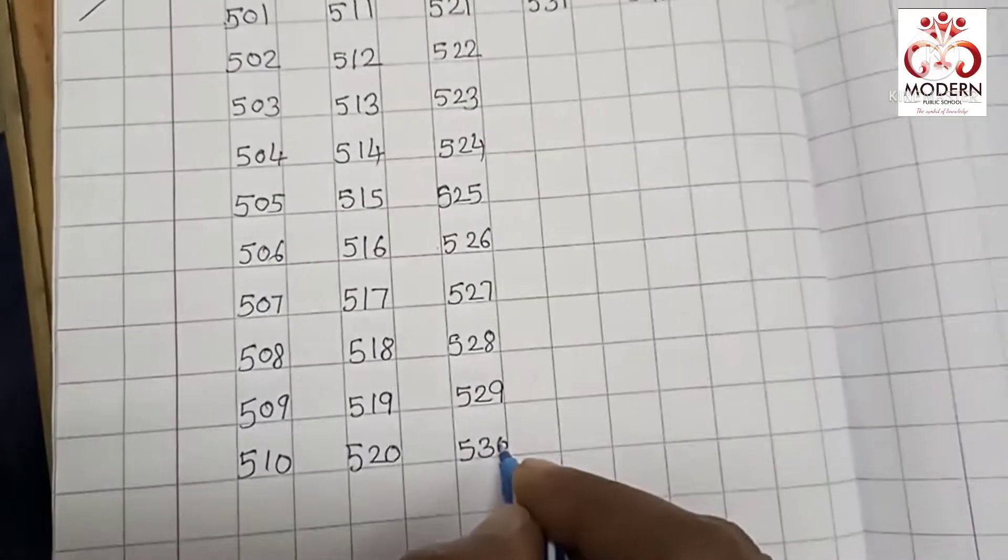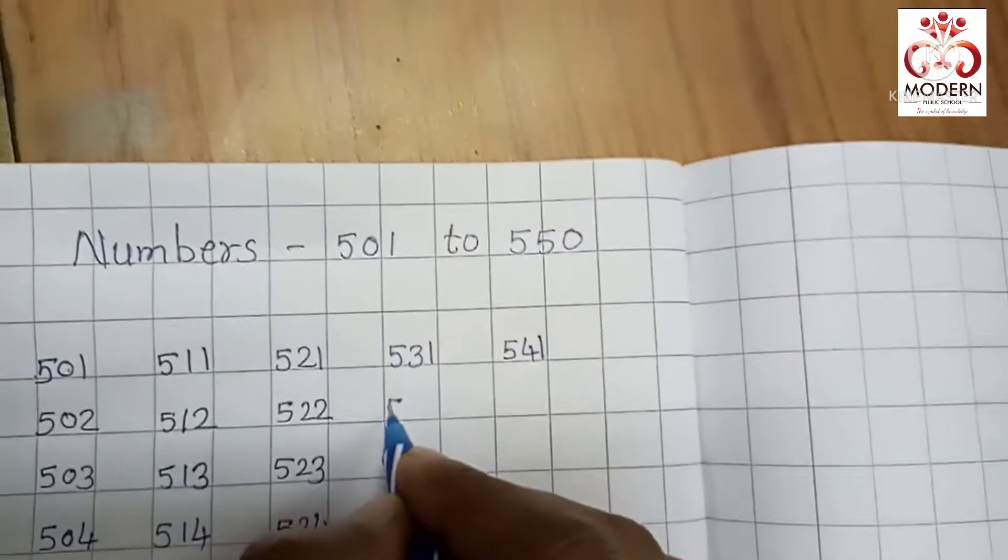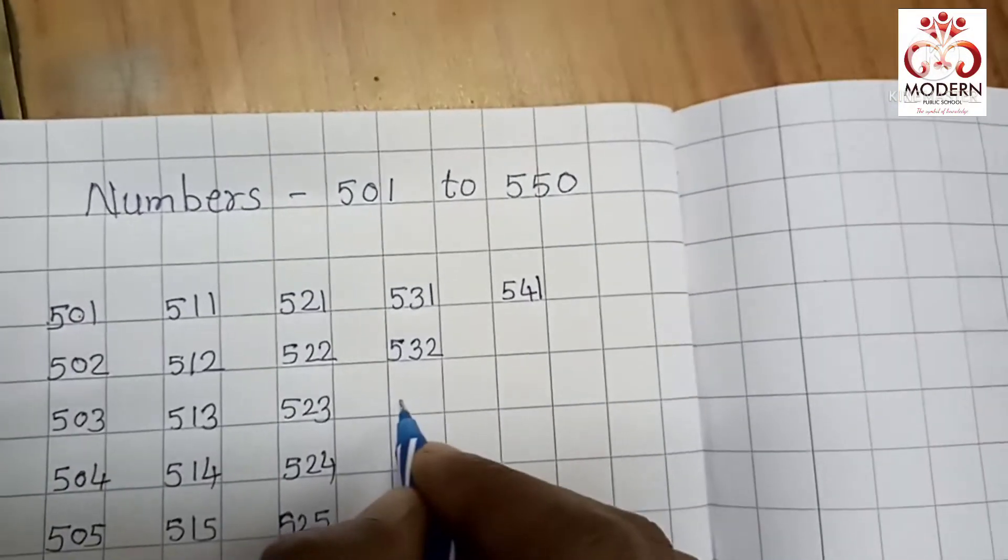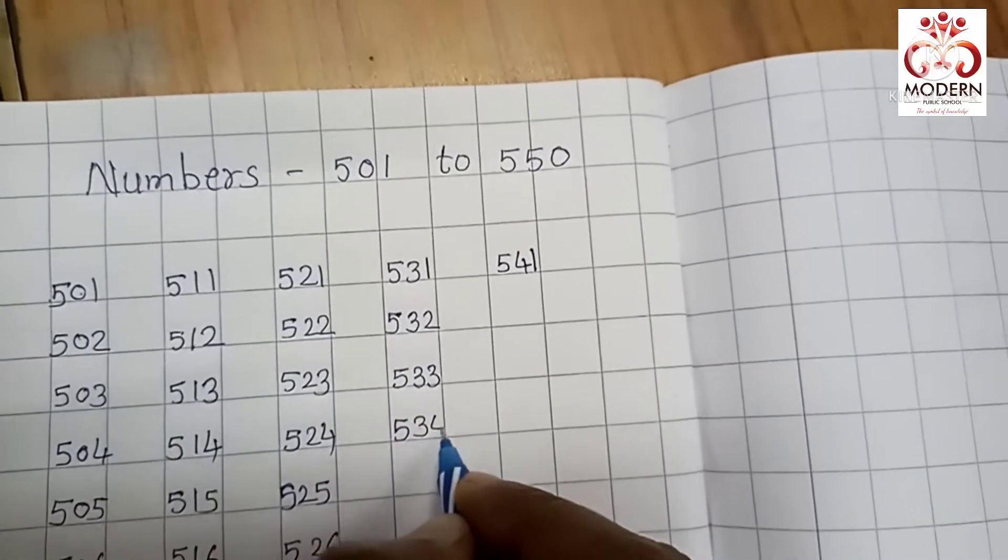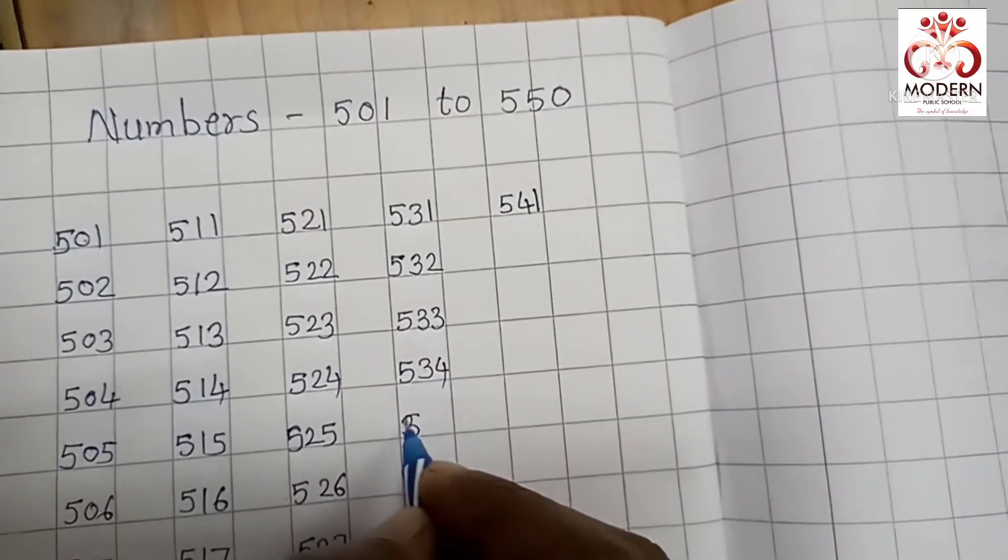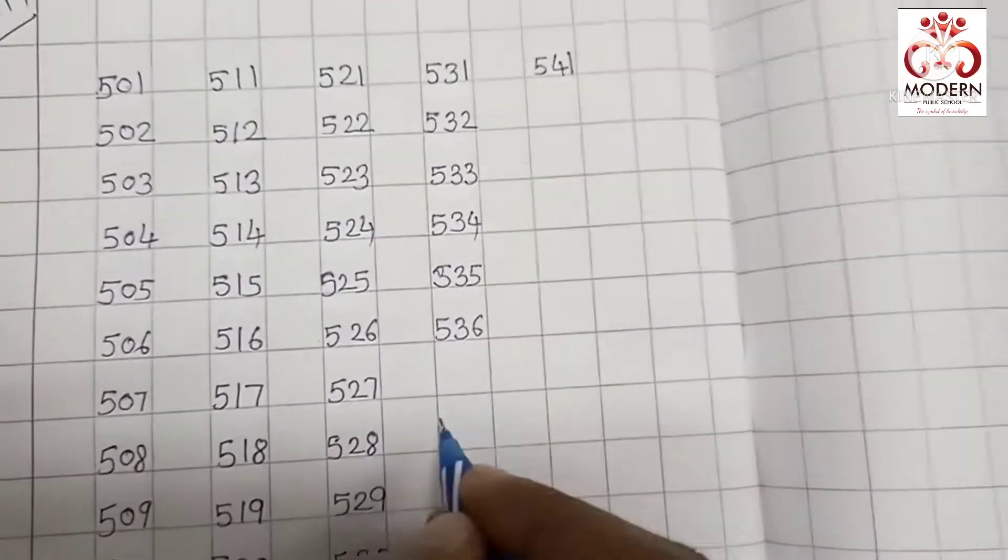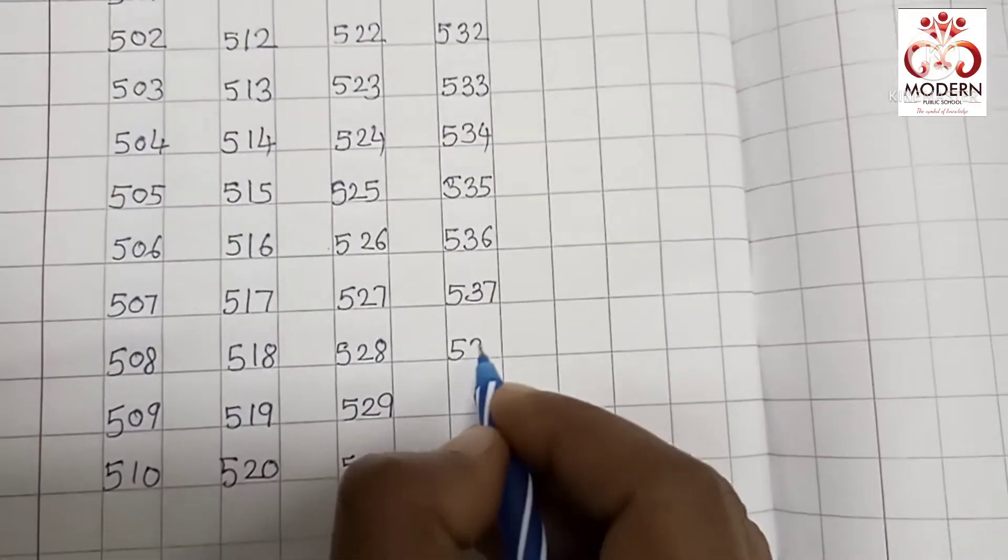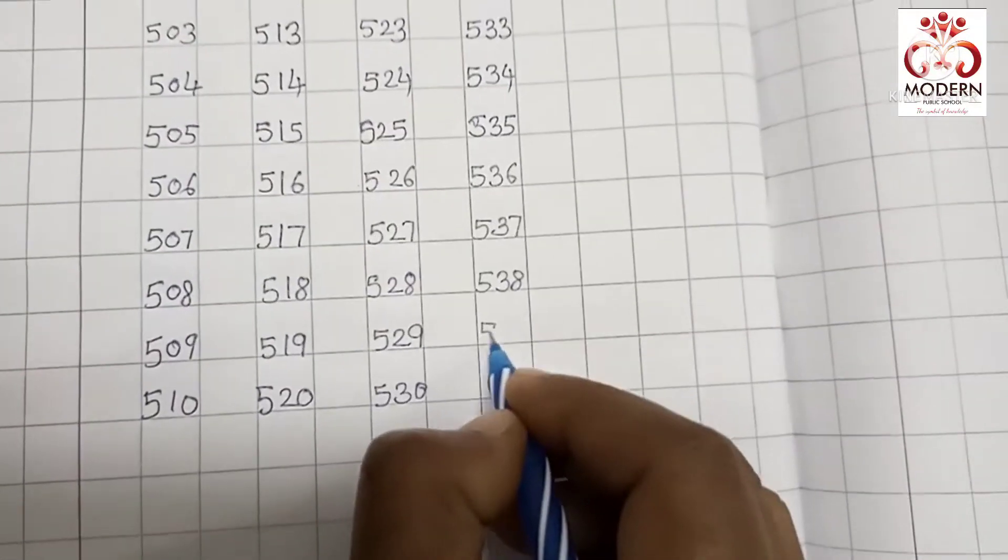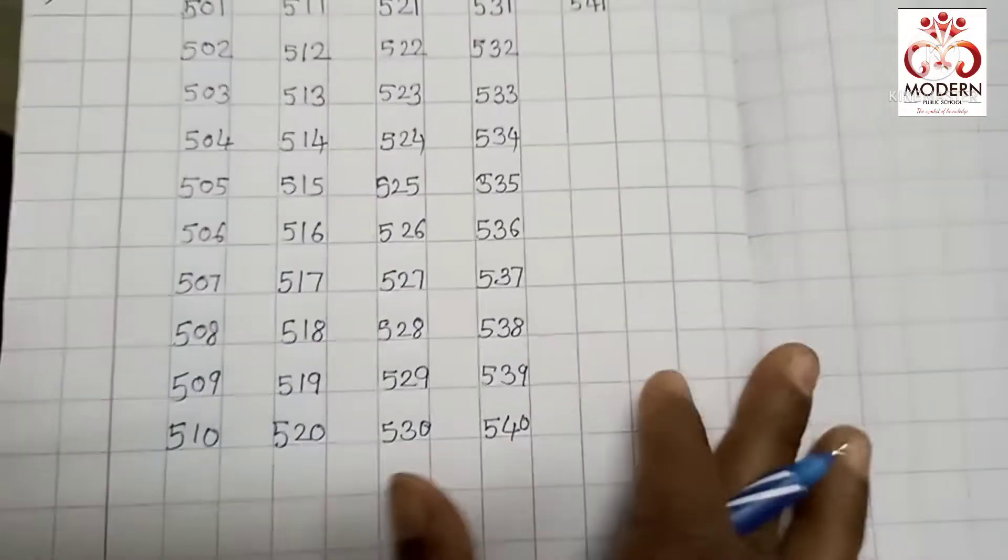Okay. Next is 531, 532, 533, 534, 535, 536, 537, 538, 539, 540.